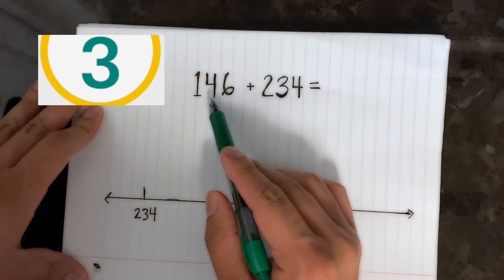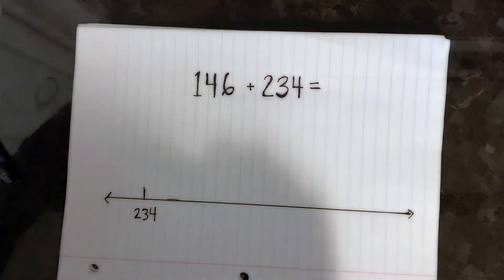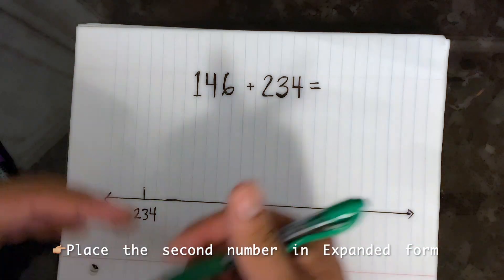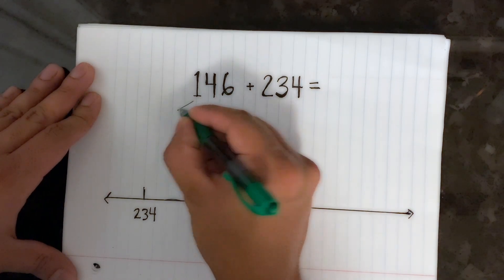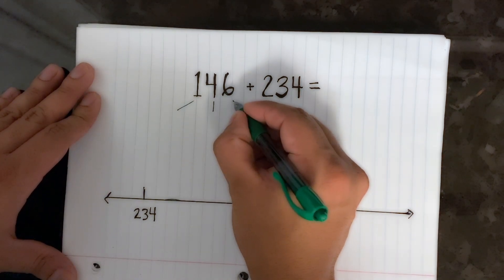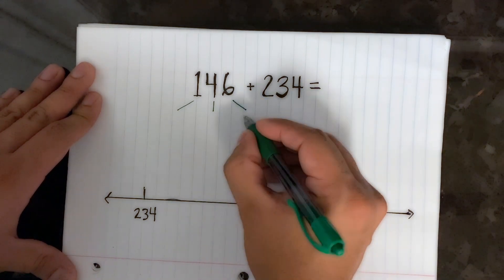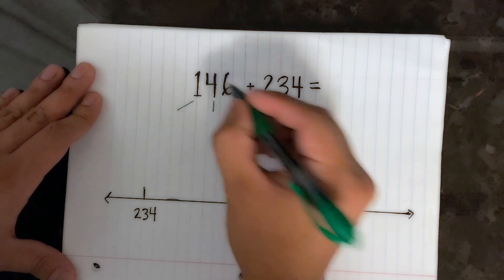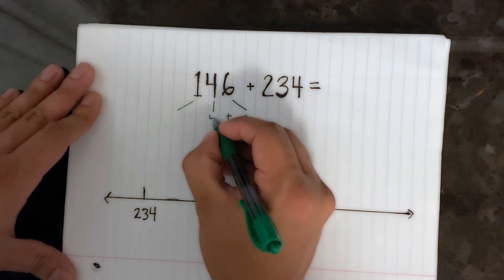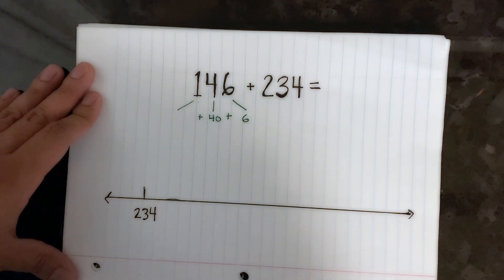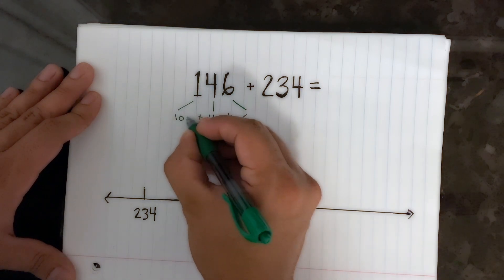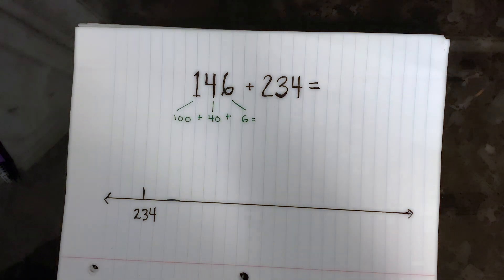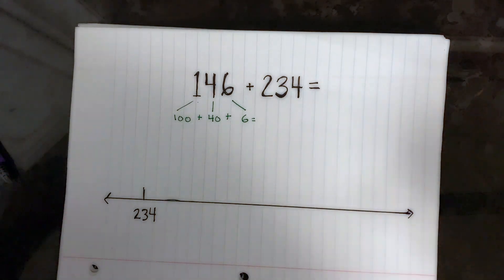All right, so for step three I want you to take a look at your other number that you're going to be adding, and I want you to put that in expanded form — or you might have heard it as decomposing. So let's go ahead and put 146 in expanded form. The six is in the ones place, the four is in the tens place and that's a 40, and the one is in the hundreds spot, so we know that is in the hundreds.